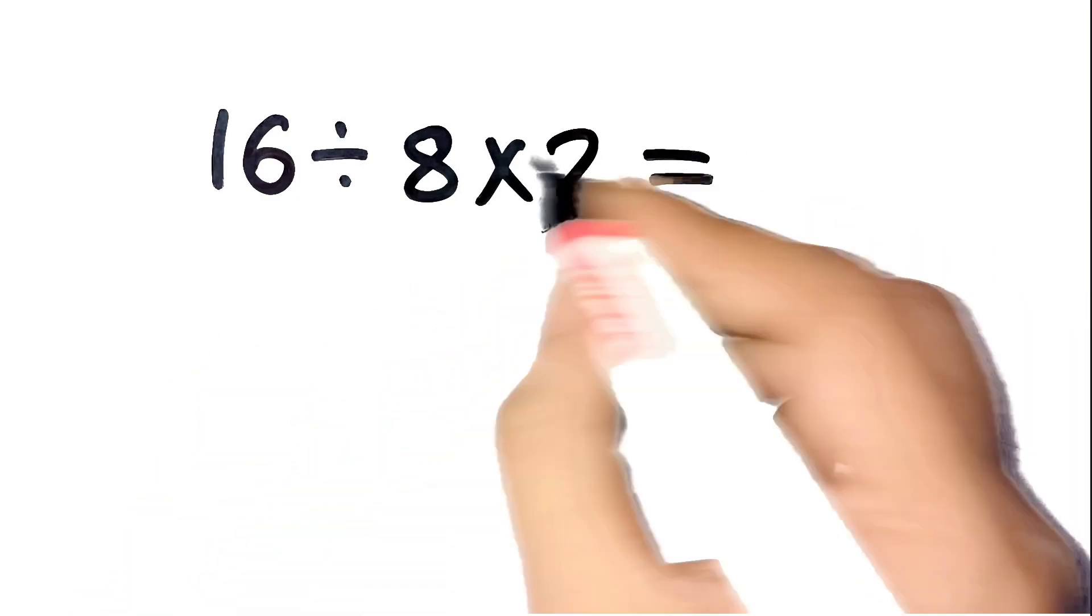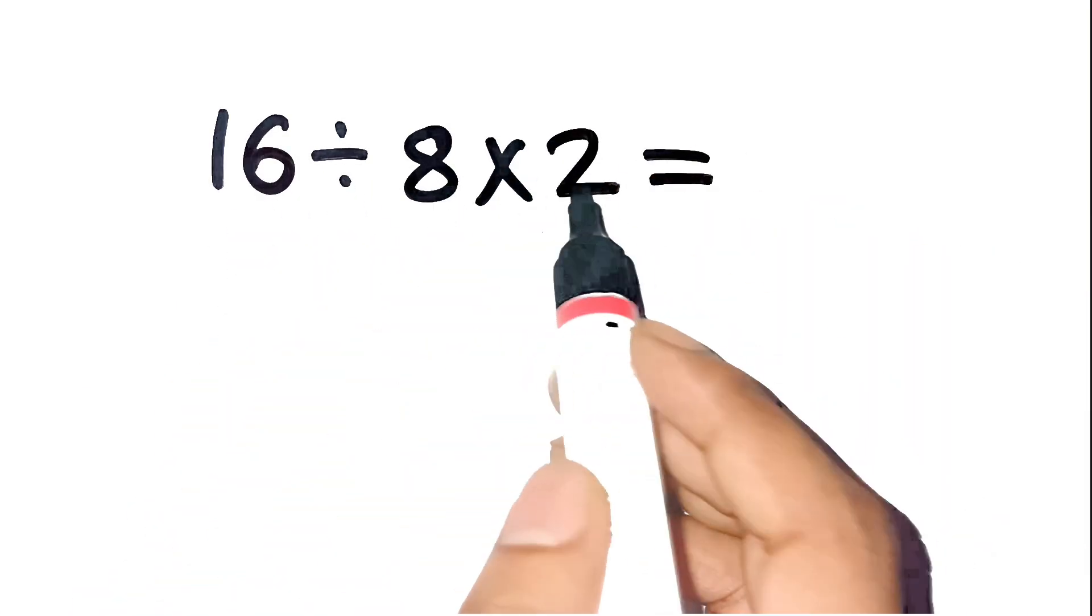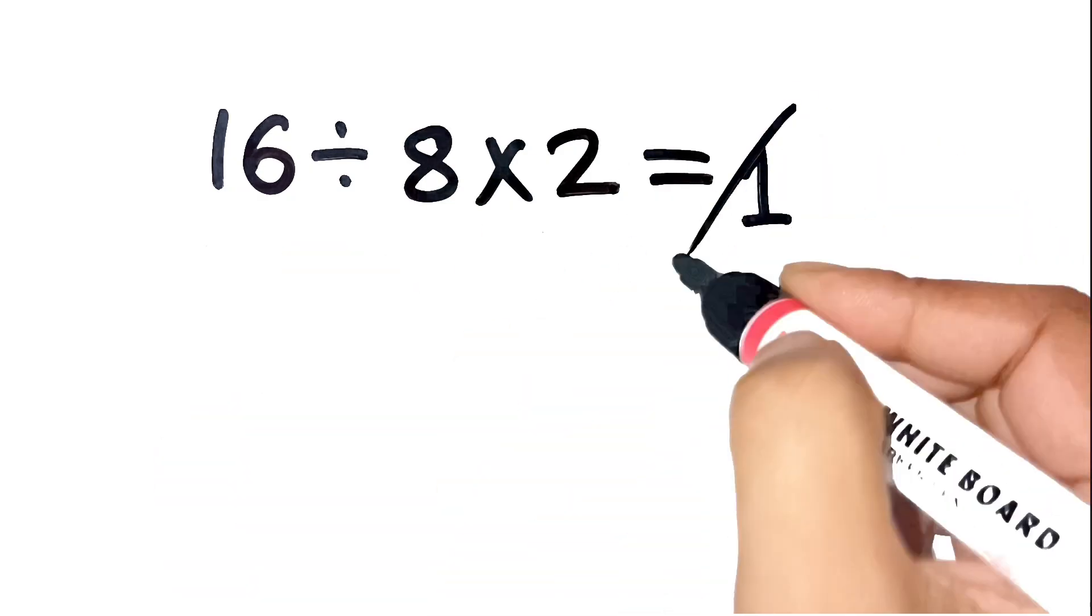Okay, if you think the answer to 16 divided by 8 times 2 is 1, you are absolutely wrong.